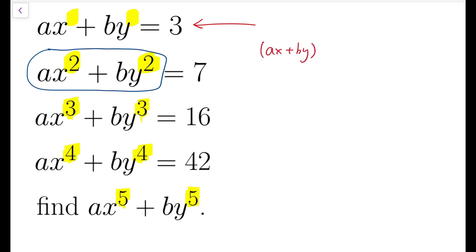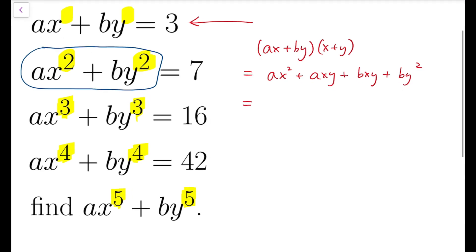When I multiply this by x + y, then it's equal to ax² + axy + bxy + by². And that is ax² + by² plus xy multiplied by a + b.